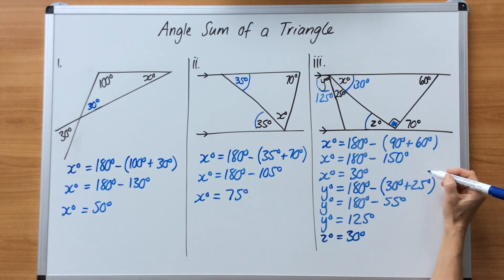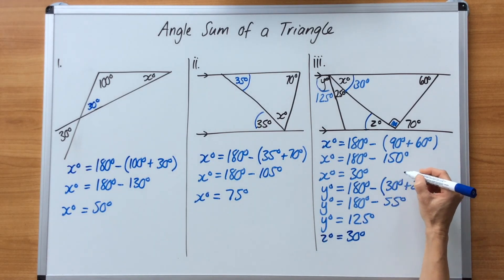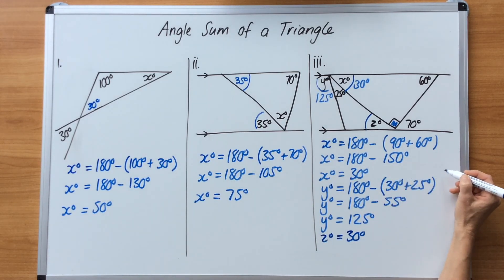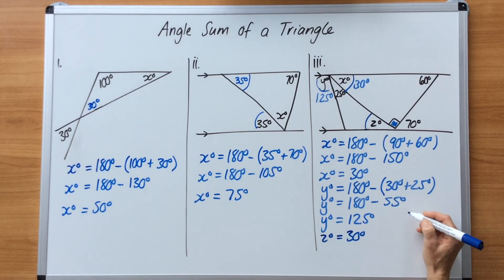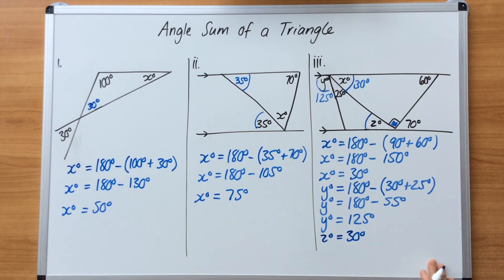You would normally need to put down the rules or the types of angles you used to solve these. So you would write angle sum of a triangle, supplementary angles, and alternate angles. It is very important that you do that for each of these types of questions.